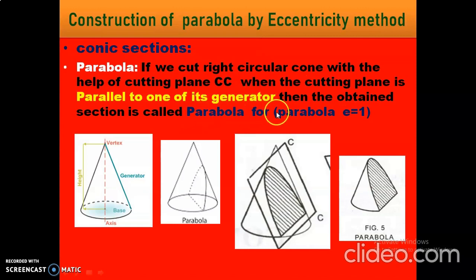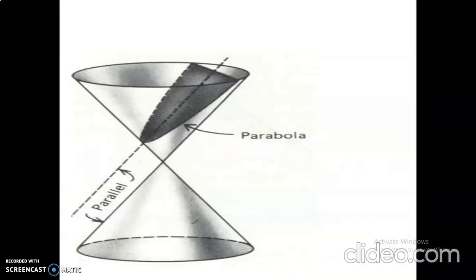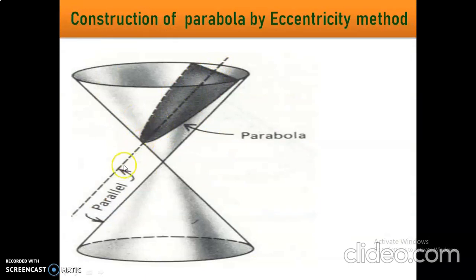This is the right circular cone being cut with the cutting plane CC. This rectangular shape is the cutting plane — it acts as a knife. The condition is that this cutting plane is parallel to one of its generators, so the obtained section is the parabola shape.